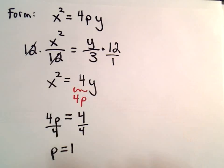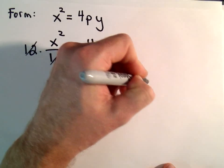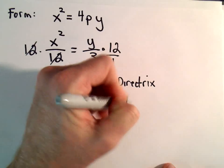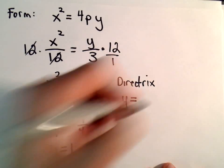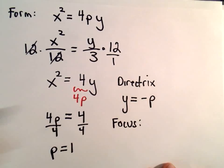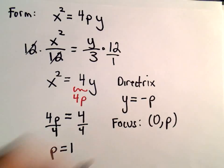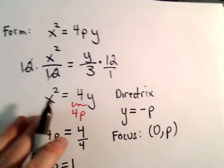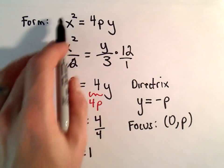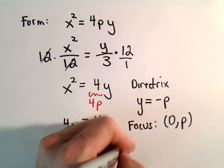We know from this form that the directrix is of the form y equals negative p, and the focus of our parabola is at 0, p. When we have our parabola in the standard form, the vertex is going to be at the origin.